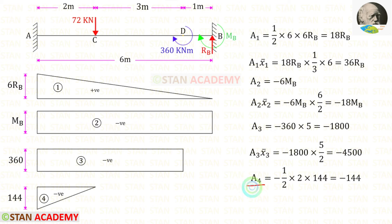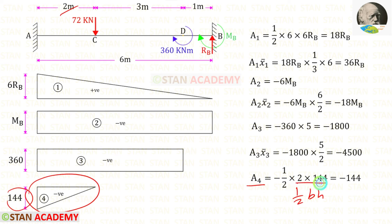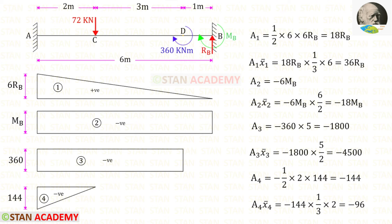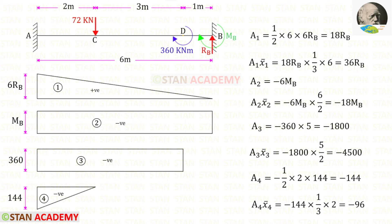Now let us find Area 4. We know it is a triangle, and the area formula is half into B times H. Here the breadth is 2 and the height is 144. For Area 4 we will get minus 144. Now let us find Area 4 times x̄₄. The formula is one-third into B, and here the breadth is 2. For Area 4 times x̄₄ we will get minus 96.